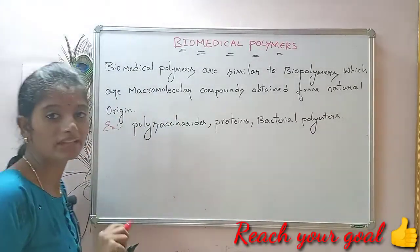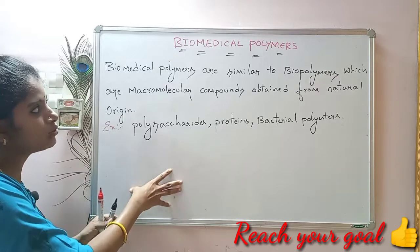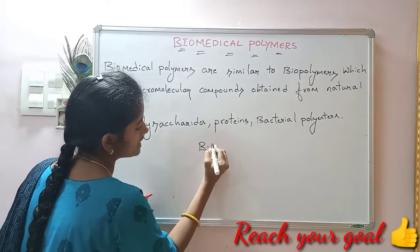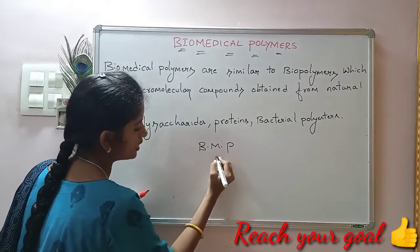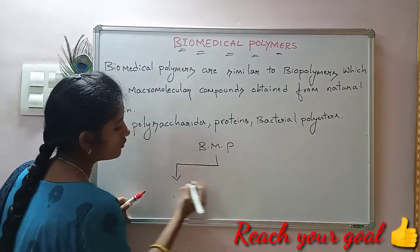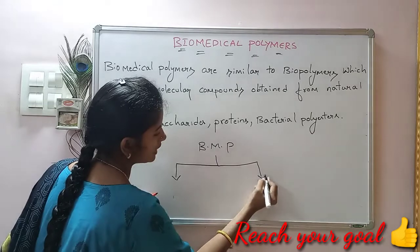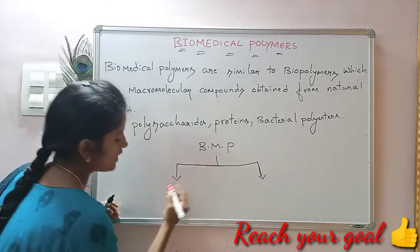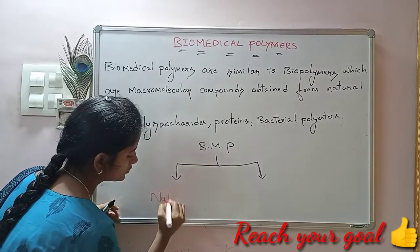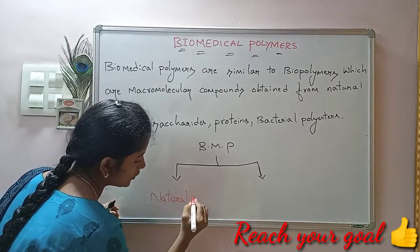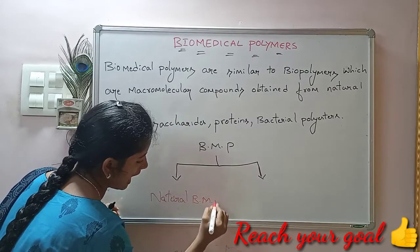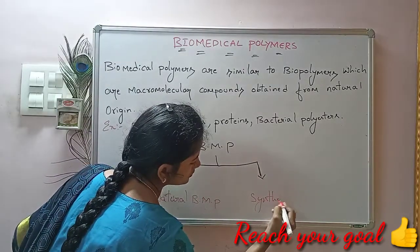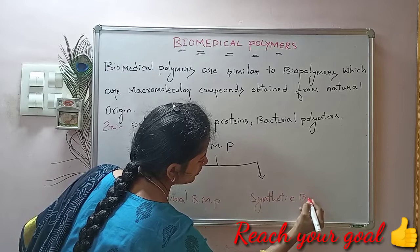Coming to classifications of biomedical polymers, there are two types: first one is natural biomedical polymer, and second is synthetic biomedical polymer.